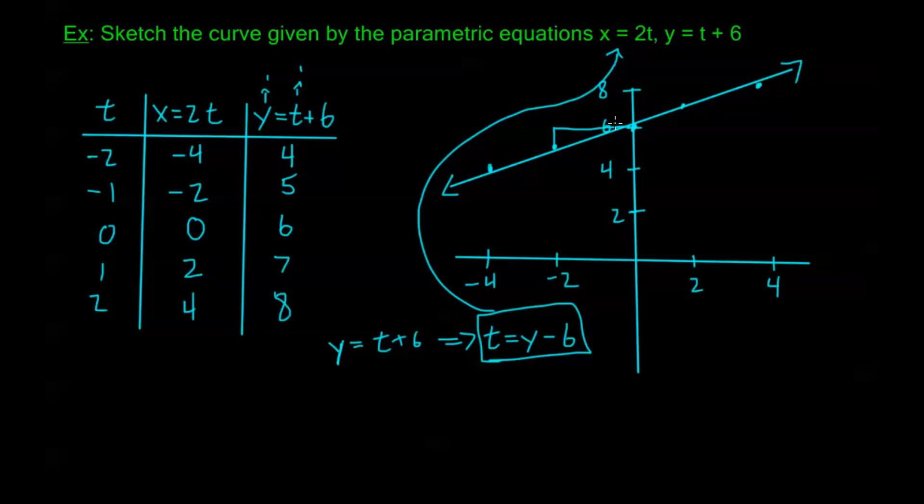Now once I have t, I can plug this into the other parametric equation. It's very important that whichever parametric equation you solve t for, you plug that result back into the other equation. If I plug in t equals y minus 6 here, everything's going to simplify down to just y equals y, and that's not very helpful at all. That's not what we're looking at. So I'm going to plug in my t here.